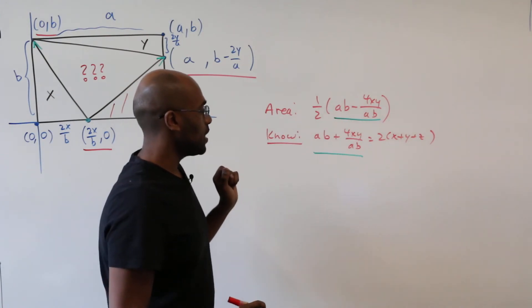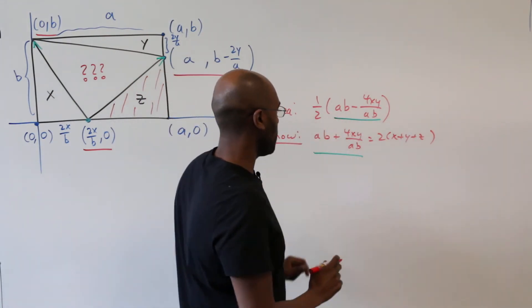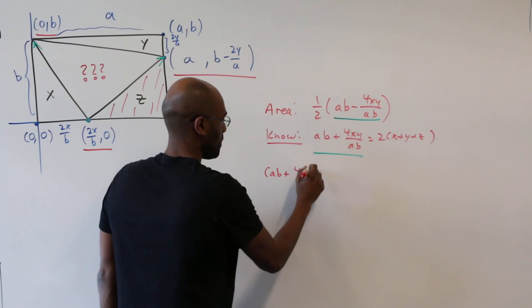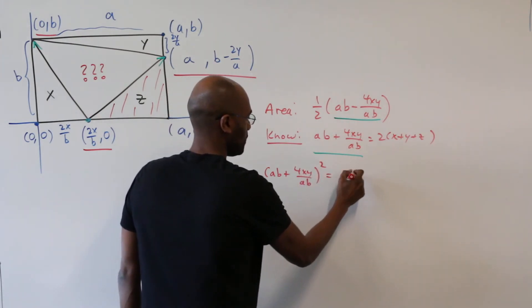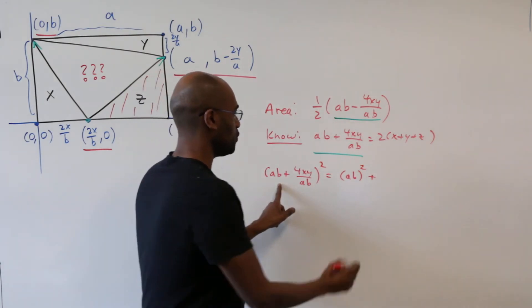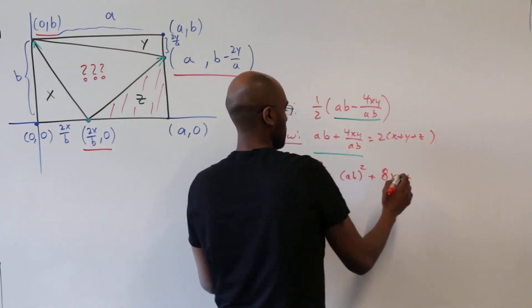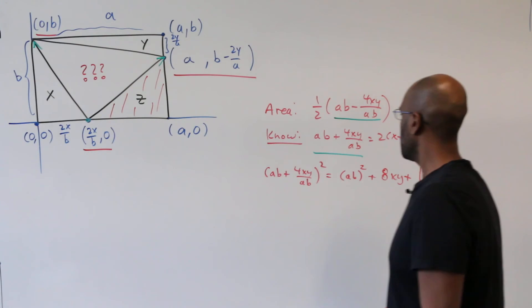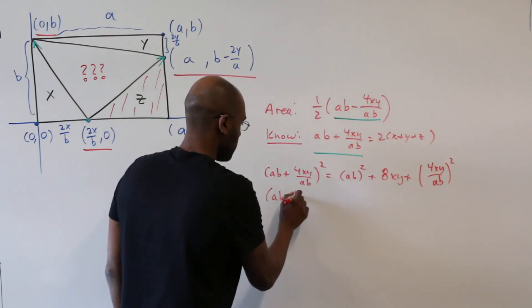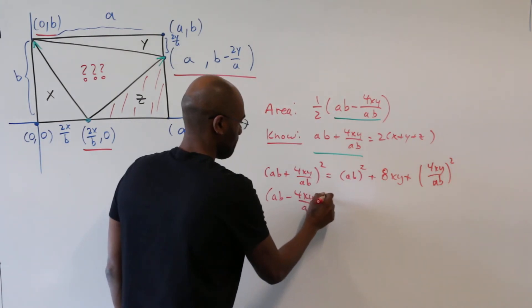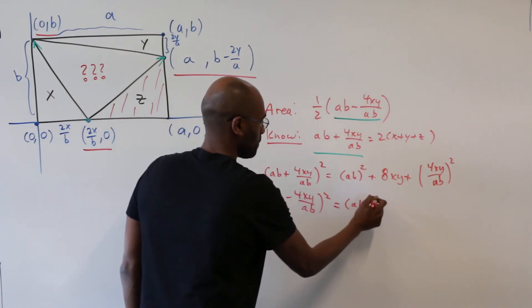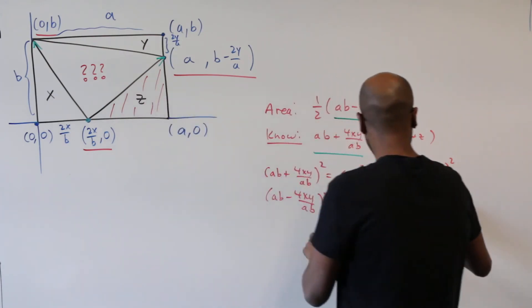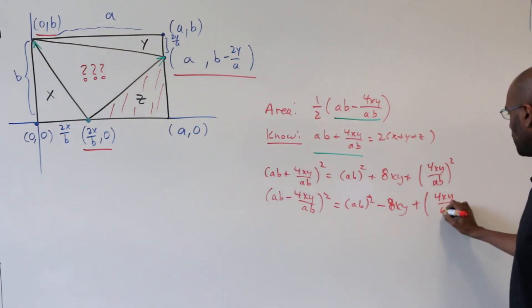Now you notice these quantities here and here look quite similar and a way to look at how they're related in order to figure out what this value is is by considering squaring both of them. If we square this value here by the distributive property we get the quantity ab squared plus twice the product of these two which is 8xy plus the quantity 4xy over ab all squared. If we instead square the function involved in our area we get the quantity ab squared minus 8xy but then we still have a plus of the quantity 4xy over ab all squared.